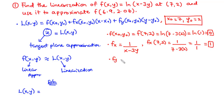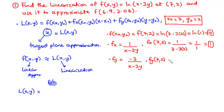Next we find fy, the partial derivative with respect to y. Differentiating the inside function, x goes to 0 and −3y gives −3, so fy = −3/(x − 3y). Therefore fy(7, 2) = −3 over (7 − 3·2) = −3 over 1 = −3.